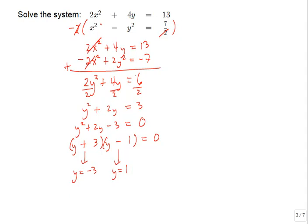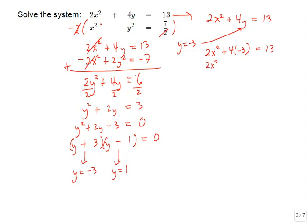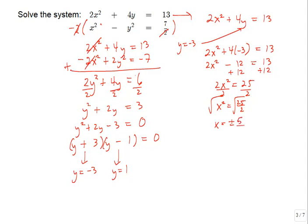We still need to find x, so we go back to the original system and use the top equation since it has no fractions. Let y equal negative 3 first: 2x squared plus 4 times negative 3 equals 13, giving 2x squared minus 12 equals 13, so 2x squared equals 25, and x squared equals 25 halves. Taking the square root with plus or minus: square root of 25 is 5, and rationalizing the denominator gives x equals plus or minus 5 root 2 over 2.